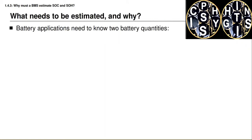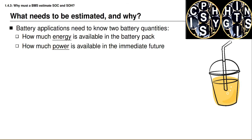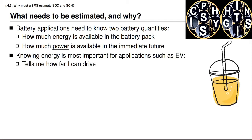Applications using battery packs fundamentally need to know two basic quantities that describe the present state of the battery. The first is how much energy is available in the battery pack. The second is how much power is available in the immediate future. I try to illustrate this by drawing a glass of soda and a straw. Knowledge about how much energy is available in a battery is most important for applications like electric vehicles. In this illustration we can compare the amount of energy in a battery to the amount of soda in a glass as an analogy.